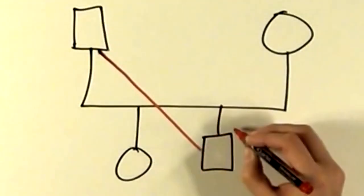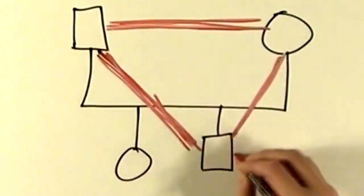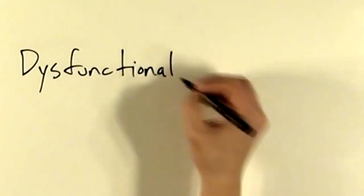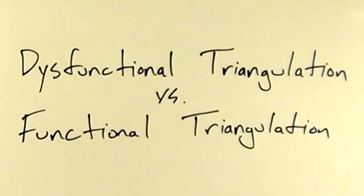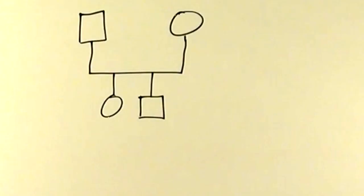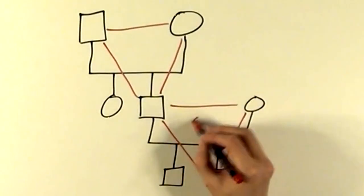Bowen believed that particular triangles become fixed over time in families and act predictably to alleviate stress and anxiety. I like to delineate between what I might call dysfunctional triangles and functional triangles. A dysfunctional triangle is one that perpetuates the problem, and a functional triangle helps resolve the problem. Bowen believed that the triangle between you and your parents is the most important triangle in your life, and that this triangle determines the interactional patterns for your future relationships.